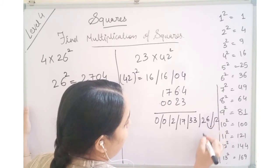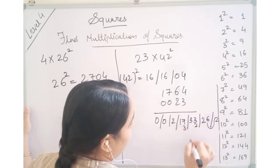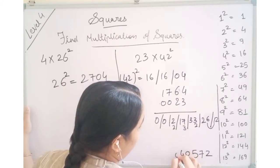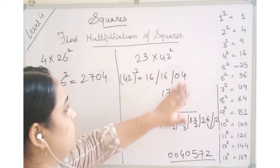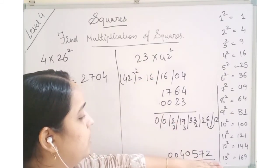As it is 2. 1 went here so 27. 2 went here 35. 3 went here 20. 2 went here 4. And 0 will be as it is. This is the answer for 42 square which is 1764 multiplied by 23 is 40572.